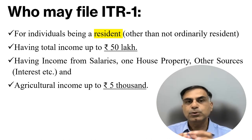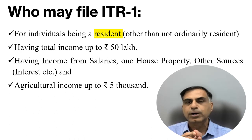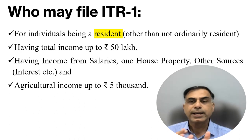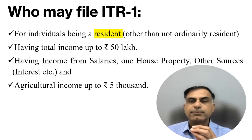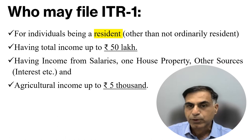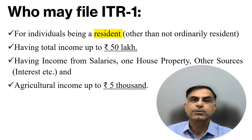For example, suppose you meet all other criteria — you are a resident, a salaried person, you have not more than one house property, and you have some interest income from a savings bank — but your agriculture income is say 50,000 rupees. Then ITR 1 form will not be applicable to you; you will have to pick up ITR 2. So if all these conditions are met, you will be able to fill form ITR 1.